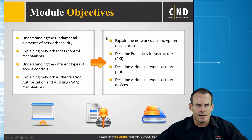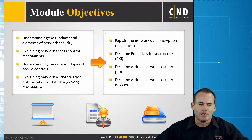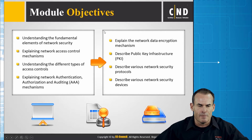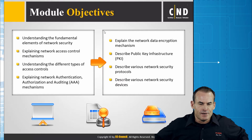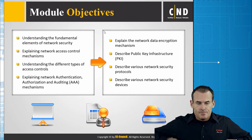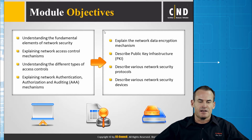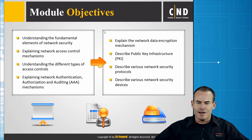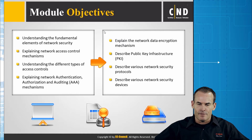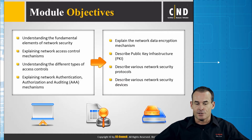Our module objectives: understanding the fundamental elements of network security, explaining network access control mechanisms, understanding the different types of access controls, explaining network authentication, authorization, and auditing mechanisms, explaining network data encryption mechanisms, describing public key infrastructure, describing various network security protocols, and describing various network security devices.